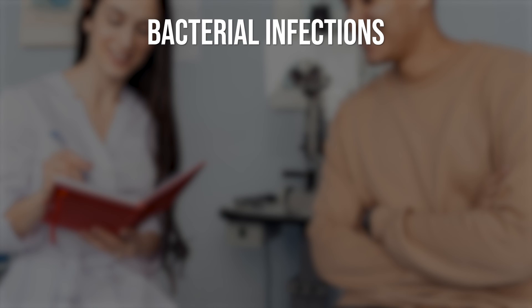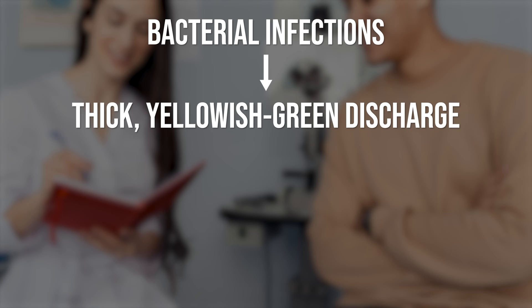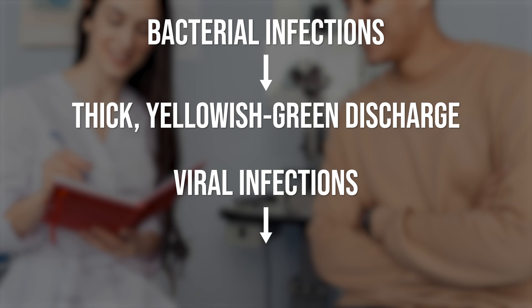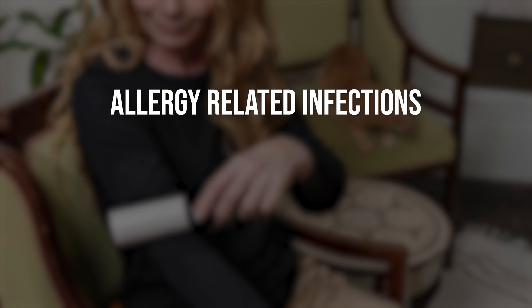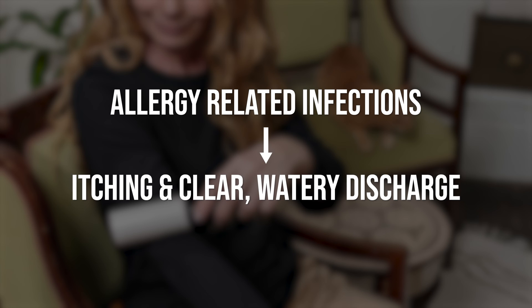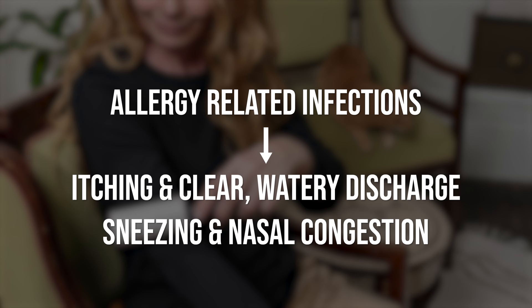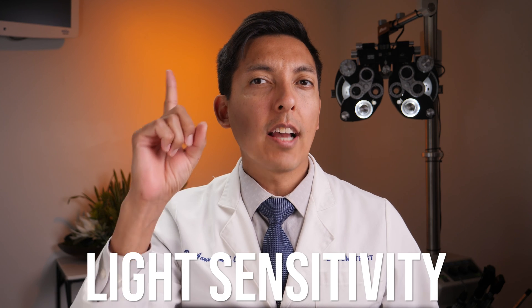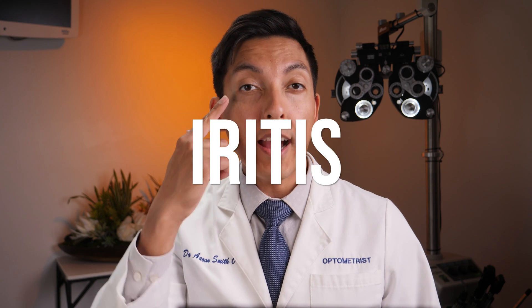The bottom line is that your local optometrist knows that bacterial infections often result in thick yellowish-green discharge, while viral infections typically cause watery discharge. Allergy-related infections might involve itching and clear watery discharge along with other allergy symptoms like sneezing or nasal congestion. Other factors like light sensitivity can be an indicator of a condition called iritis, which can either happen by itself or along with the types of eye infections discussed. Some of these infections will vary in seriousness and in their risk of causing permanent eye damage or even blindness if left untreated.